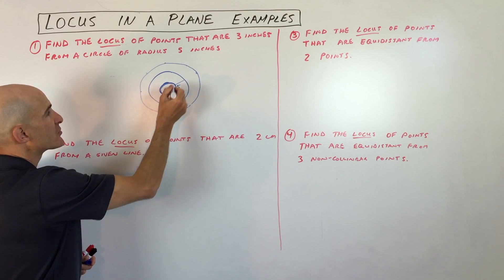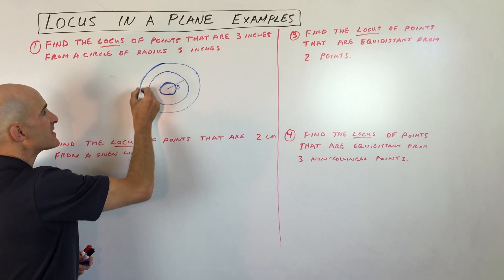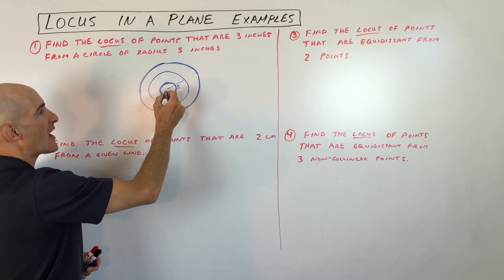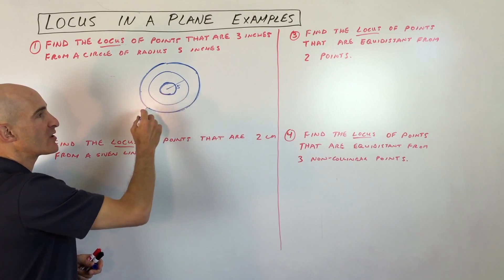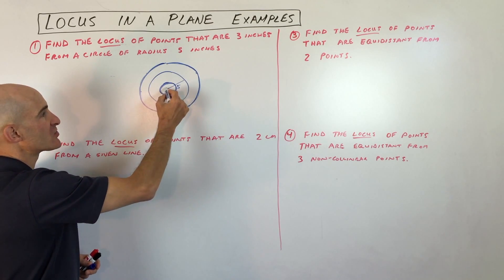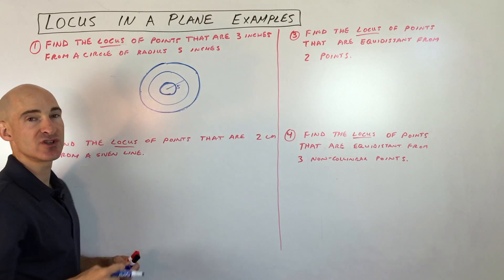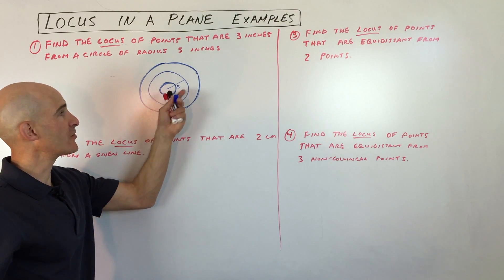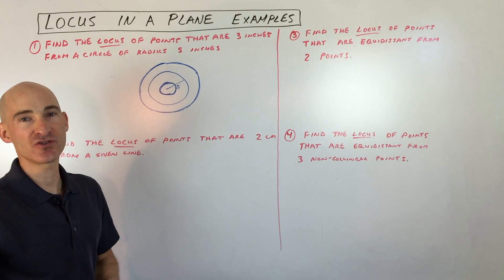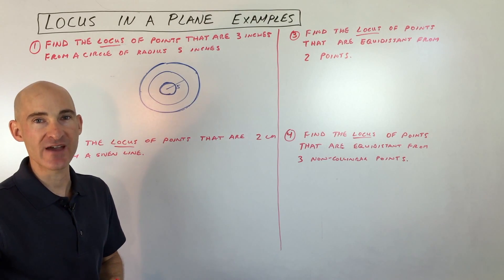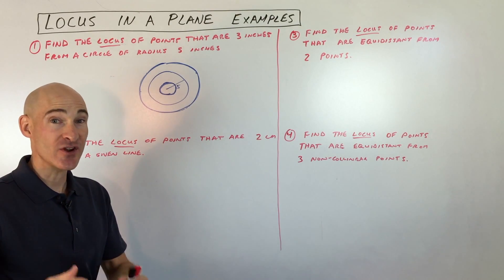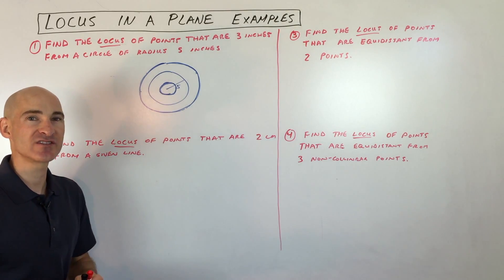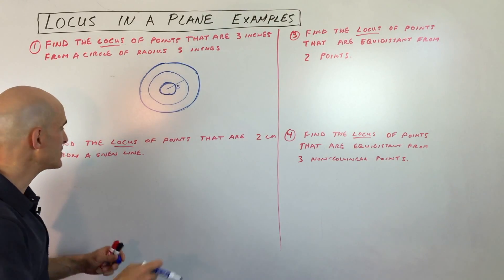I'll darken this inner circle and this outer circle. You can describe them as a circle with radius eight inches and a circle of radius two inches, that are concentric — having the same center as the given circle of radius five inches.